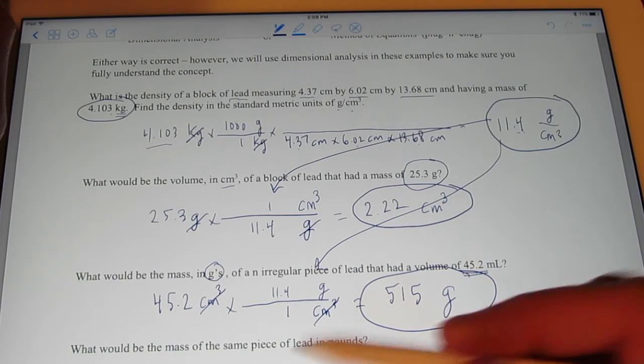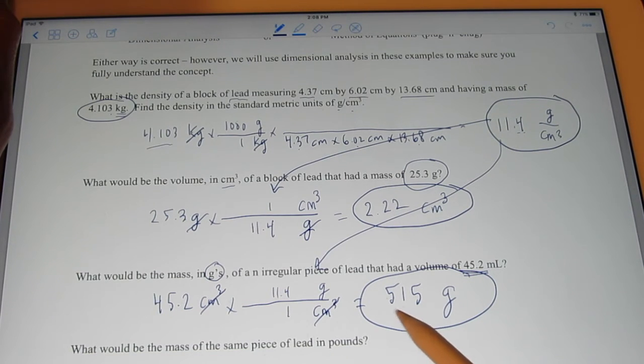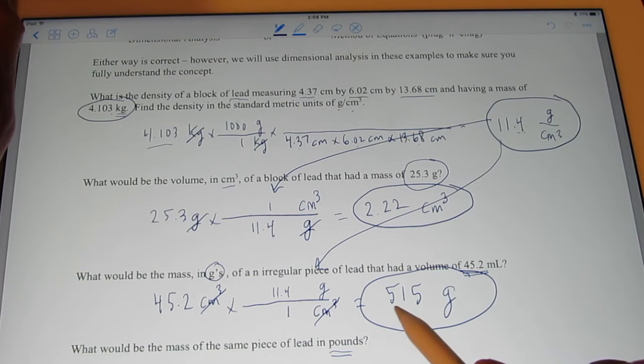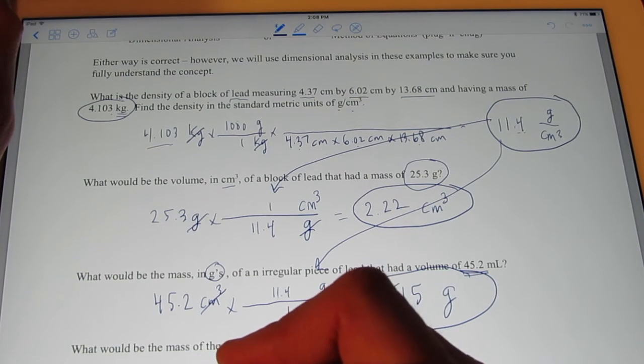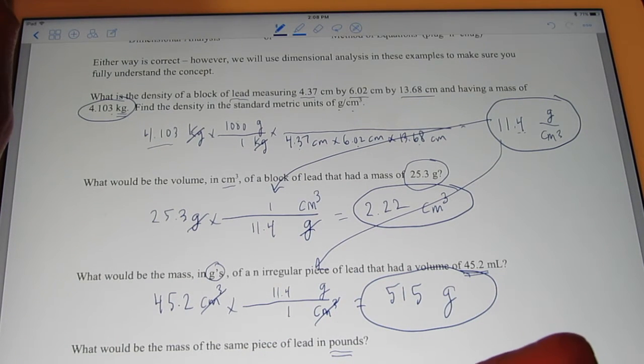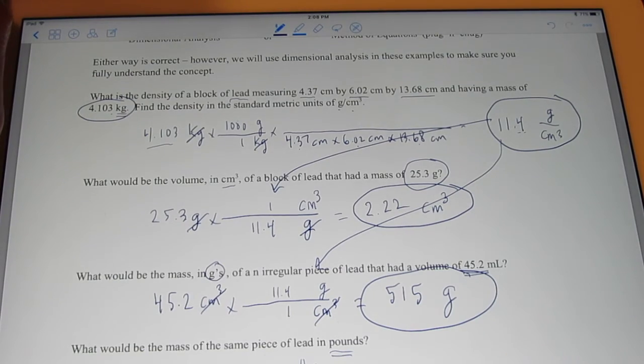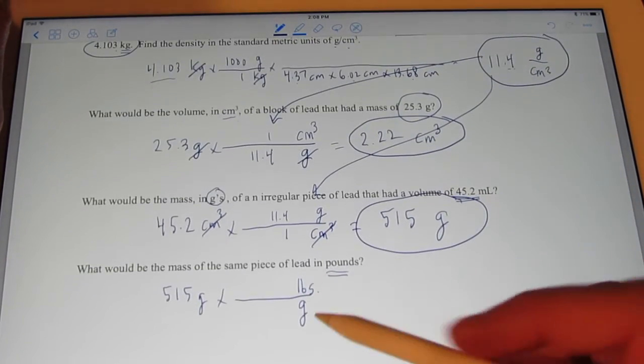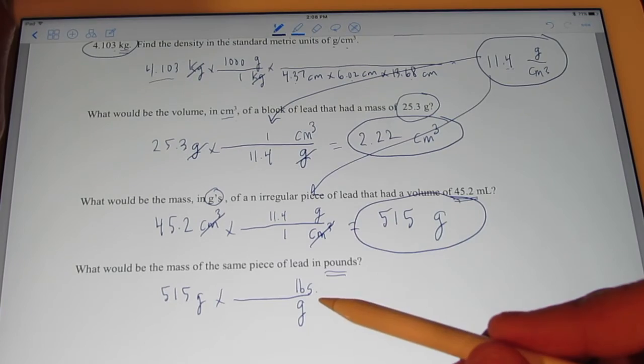Okay, let's try this one. How much would that piece of lead weigh in pounds? So, we know it's mass in grams. 515 grams. And so, we have to go from grams to pounds. Hmm, do we know a conversion factor that will help us go from grams to pounds?